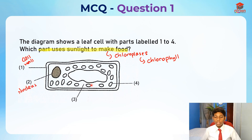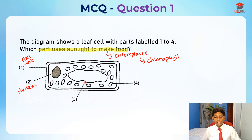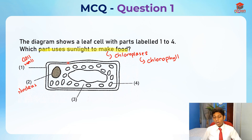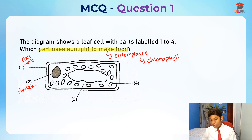Next, what is part 3? Part 3 is pointing to this empty space here. This empty space is actually not empty — it's actually cytoplasm. Cytoplasm is a jelly-like substance where all the cell parts are in, and also where chemical reactions take place.